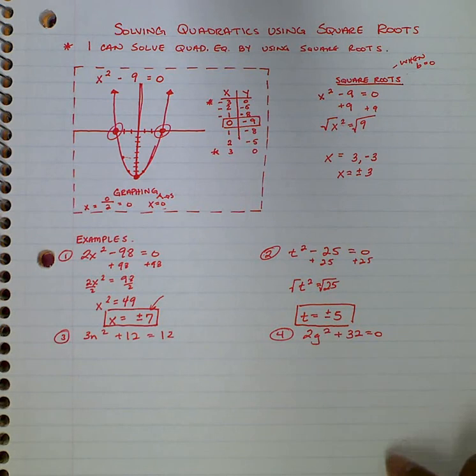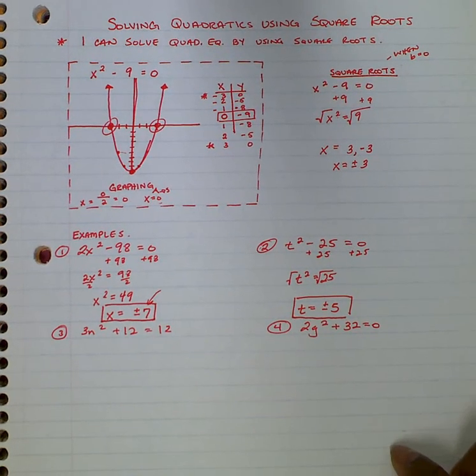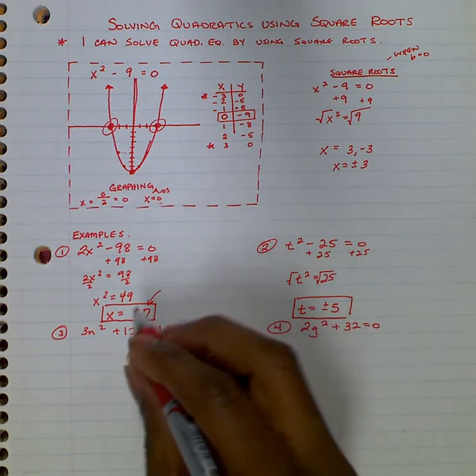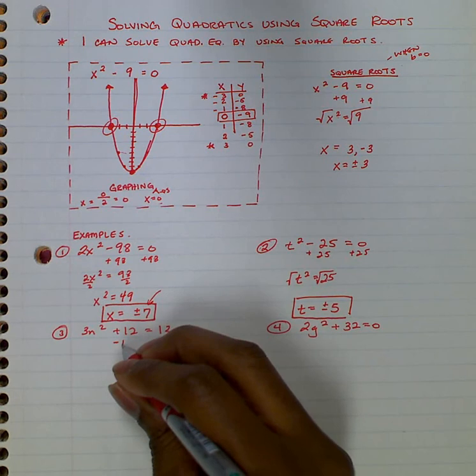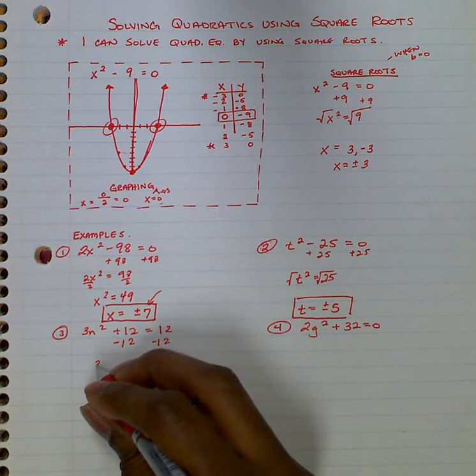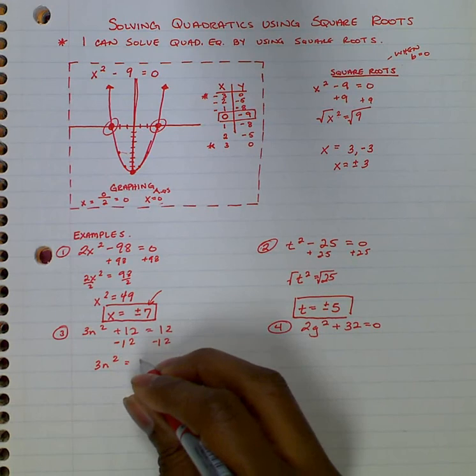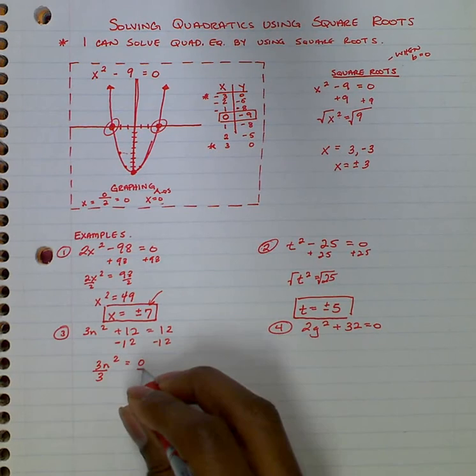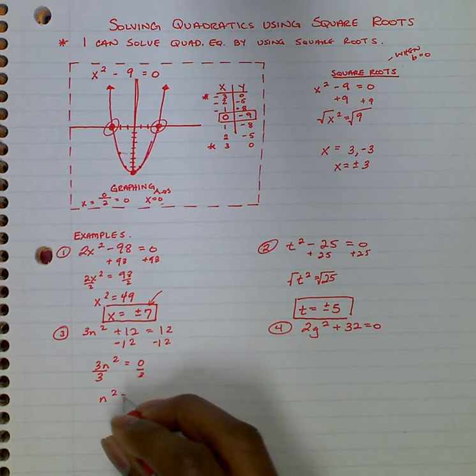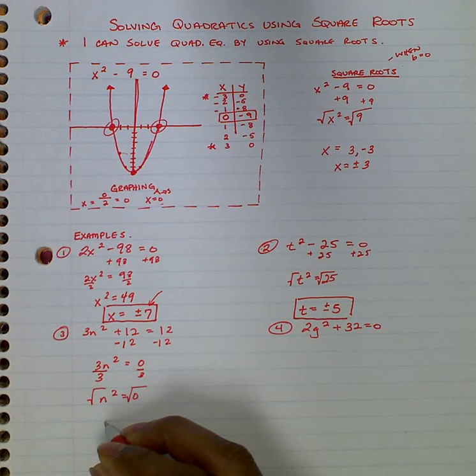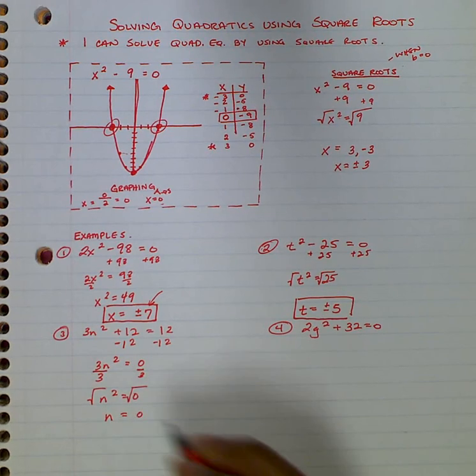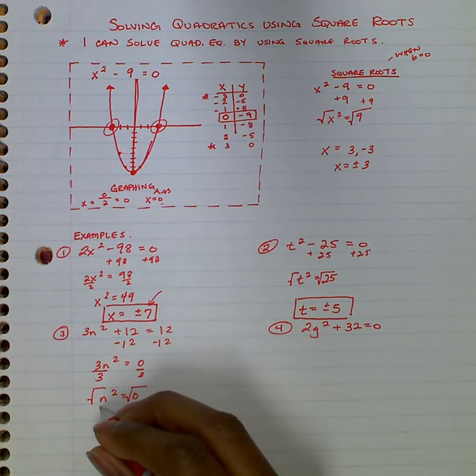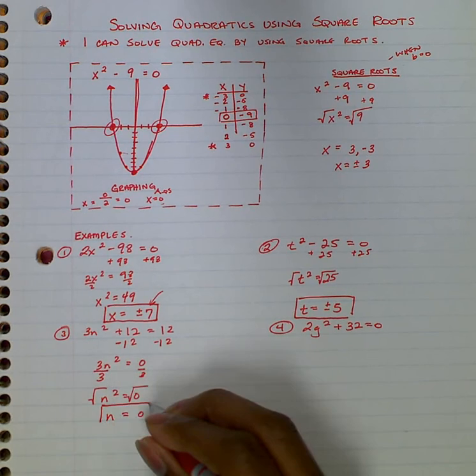If you feel confident, you can go on and try number 3 and 4 and fast forward me and see if you get the same things. If not, make sure you continue to follow along. For number 4, I'm going to subtract 12 from both sides. It gives me 3n squared equals 0. Divide both sides by 3. n squared will equal 0. Take the square root. n equals 0. Make sure here that you do not put plus or minus 0. 0 is a neutral number. It's not positive or negative, so plus or minus would mean nothing.